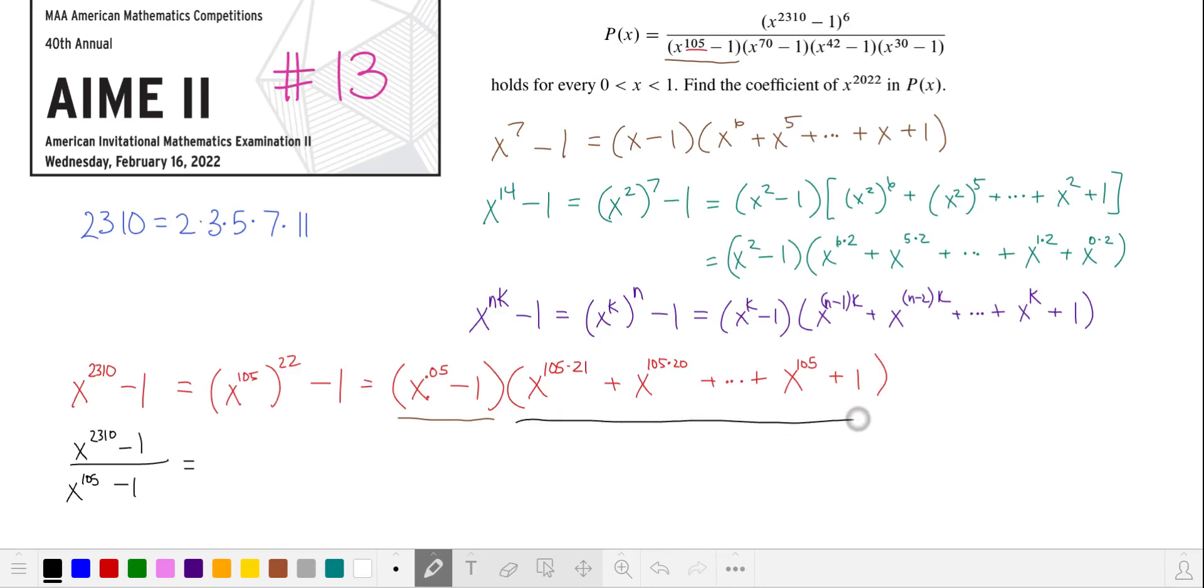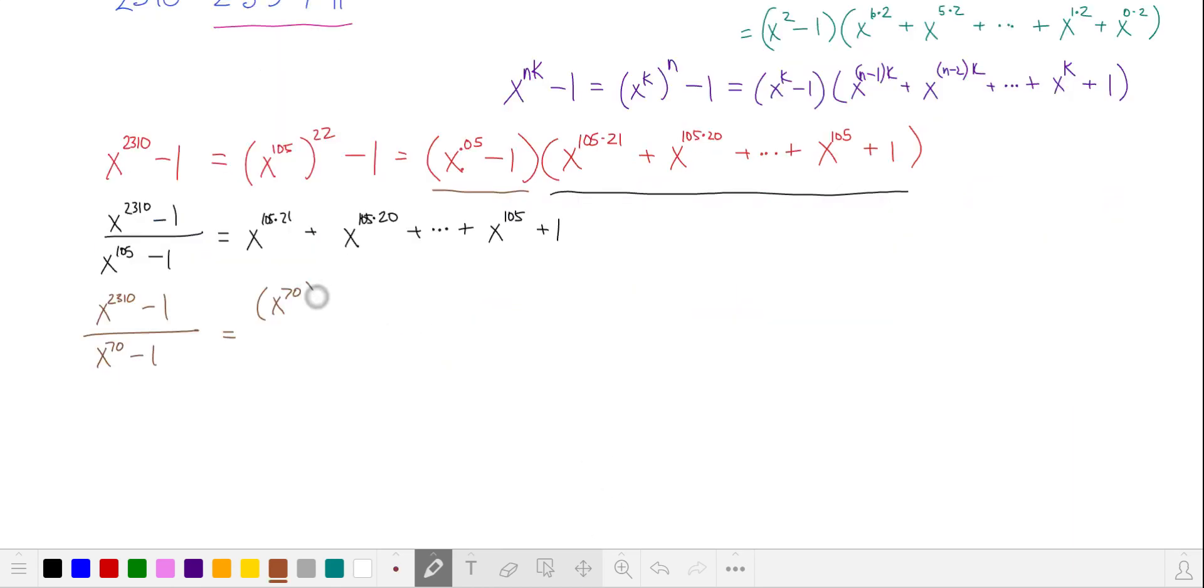So we're left with just the second factor. Let's do the same thing with the second factor in the denominator, x to the 70th power minus 1, because we can also create 70 by multiplying some of these factors together. 2310 is 70 times 33. We pull out x to the 70 minus 1, and this is our second factor.